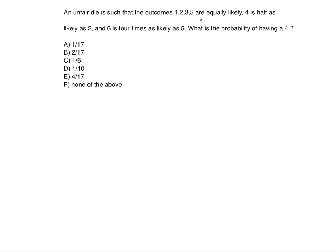An unfair die is such that outcomes 1, 2, 3, and 5 are equally likely. Four is half as likely as two, and six is four times as likely as five. What is the probability of having a four? Let's note that P(1) = P(2) = P(3) = P(5).